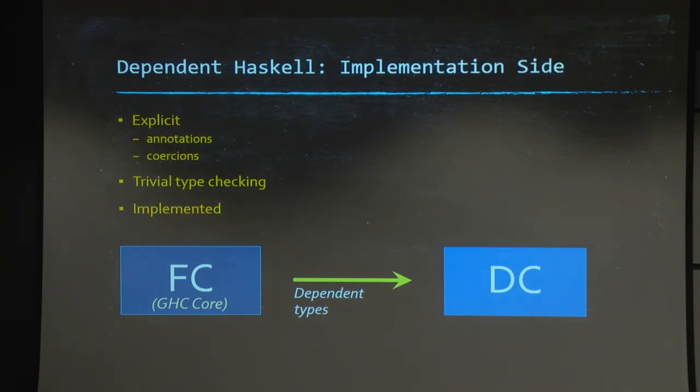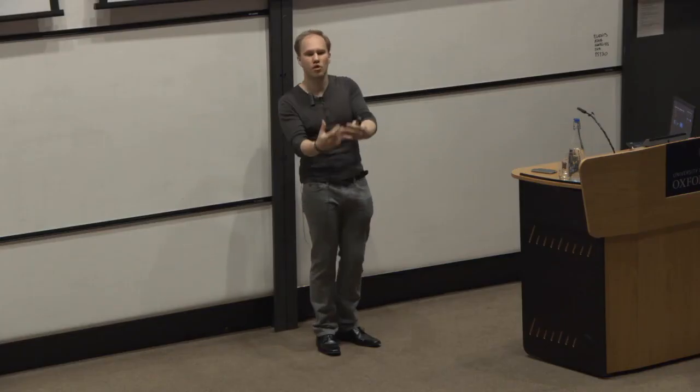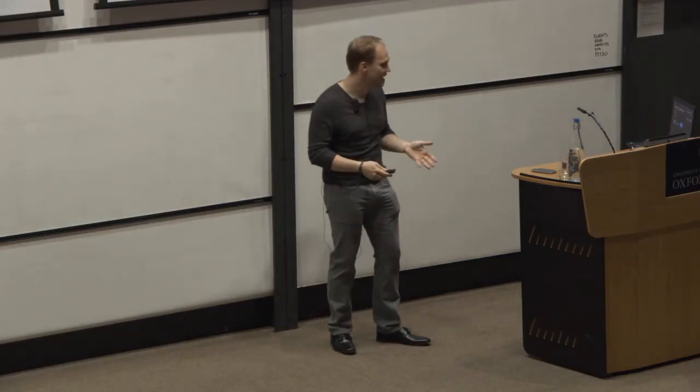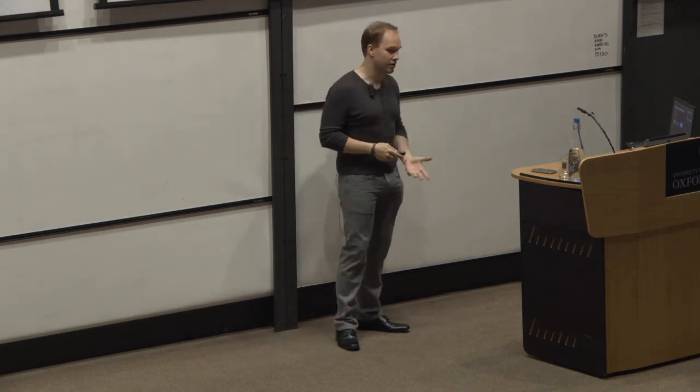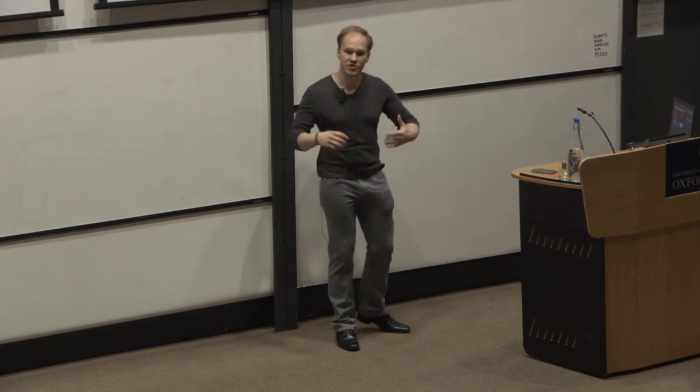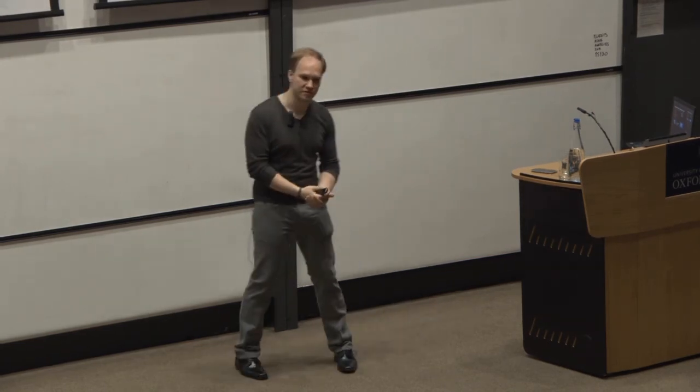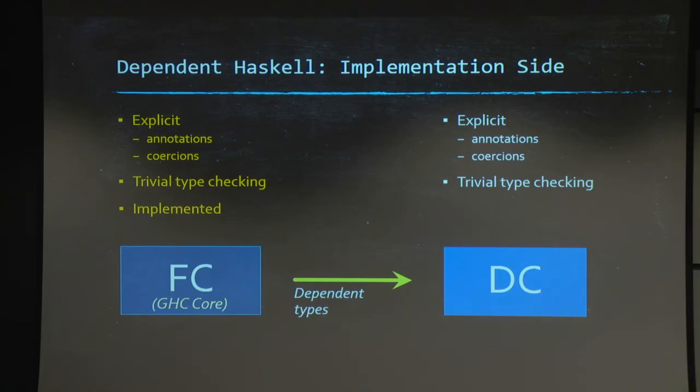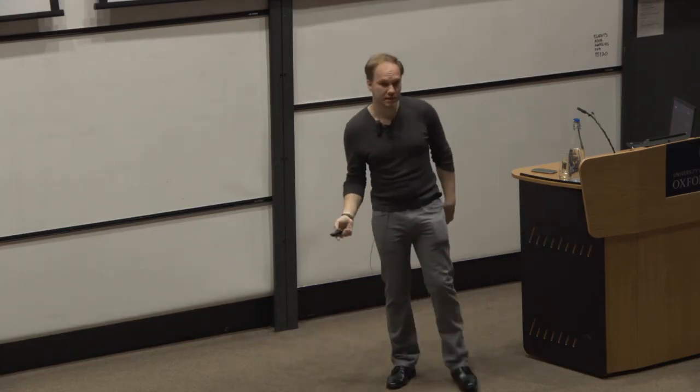Just to compare briefly, so yes, of course, DC has more powerful types than FC has. But otherwise, it has very similar characteristics. It is explicit with the same kind of annotations that we have in FC. It has a trivial syntax directed type checking again. And we've designed it to be as close as possible to an actual implementation. But there's a problem with that. What is it? Well, system DC is complicated.